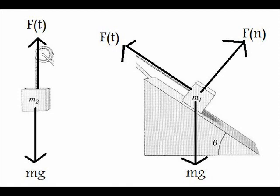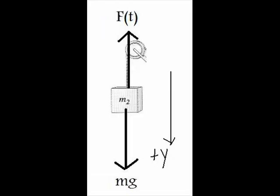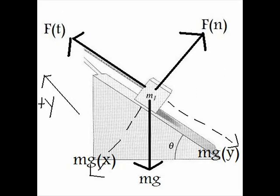Once that is good to go, you must choose a coordinate system. Look at the way the FBD diagrams are drawn and the direction the masses should go. For mass 2, positive y is going down due to the acceleration. For mass 1, positive y is going up and a nice coordinate system was drawn that includes Mgx and Mgy.